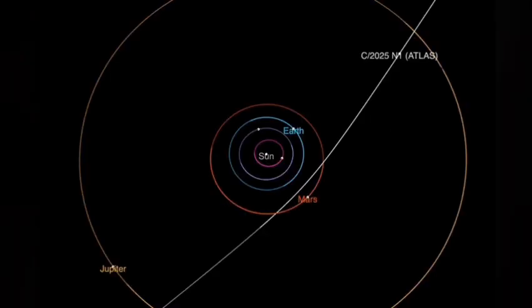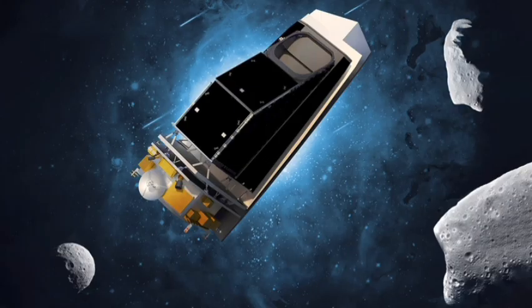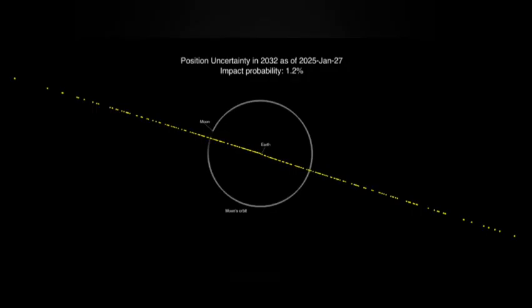In September, the SWAN instrument aboard SOHO caught C/2025 R2. SWAN specializes in ultraviolet detection, spotting comets by their hydrogen emissions. This one promised a close approach, 0.27 astronomical units from Earth, peaking around October 21st. Its southern trajectory and forecast magnitude of 4 raised hopes for naked eye visibility if its activity held. STEREO, usually tracking solar storms, found 414P, a faint, fast sungrazer. These comets skim the sun, risking disintegration before swinging away.